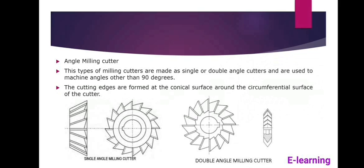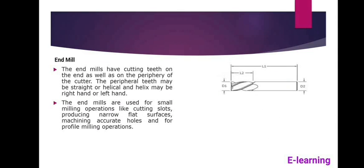In the case of angle milling cutters, the first diagram shows a single angle milling cutter and the second diagram shows a double angle milling cutter. The next diagram is the end mill. The end mill has cutting teeth on the end as well as on the periphery of the cutter.